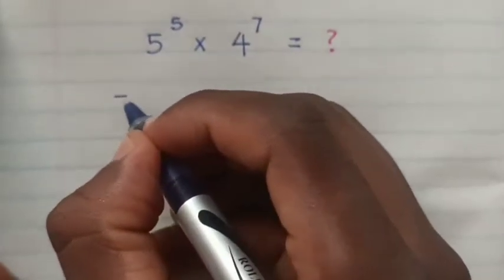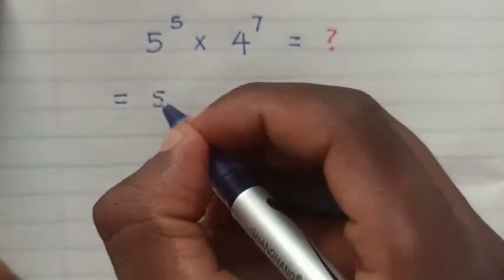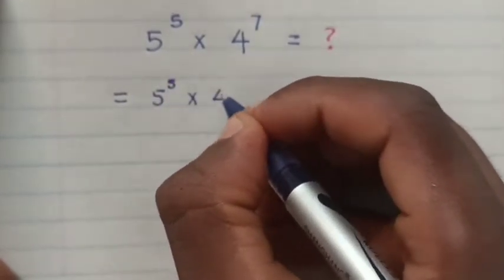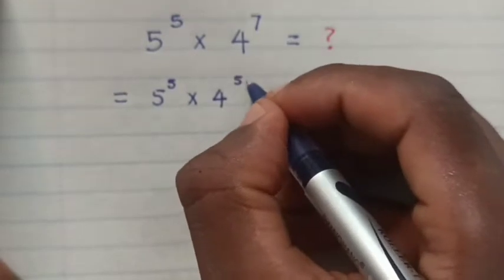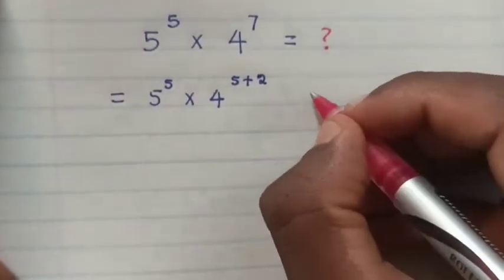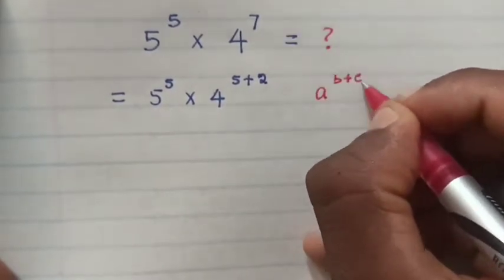So, from 5^5 × 4^7, this is the same as 5^5 times, 7 is 5 plus 2, so it will be times 4^(5+2).